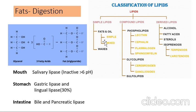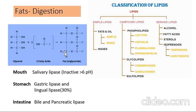Lipids are classified as simple lipids (oils, ghee, wax), compound lipids (phospholipids like lecithin, cephalin; glycolipids found in brain cells), and derived lipids (breakdown products like fatty acids and alcohol). Regarding fat digestion sites: salivary lipase is inactive above pH 6, so no fat digestion in the mouth. In the stomach, gastric lipase and salivary lipase are active; lingual lipase accounts for about 30% of fat digestion. The major digestion occurs in the intestine with bile and pancreatic lipase.